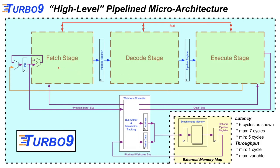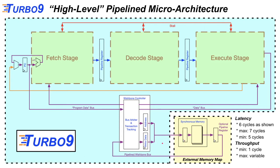Here is a high-level pipeline micro architecture. Focusing on the Wishbone bus — at the top, you see a classic pipeline architecture. We have fetch, decode, and execute stages. Inside the Turbo 9 itself, we have a Harvard architecture with separate program and data buses, while externally it is Von Neumann like a regular 6809. Inside the Wishbone controller there's a bus arbiter. When free cycles are available, it takes requests from the program bus and interleaves them. The arbiter has a priority scheme: data bus requests always take priority, but when free, it takes from the program bus.